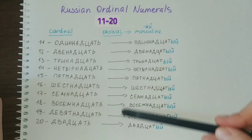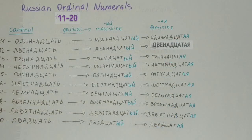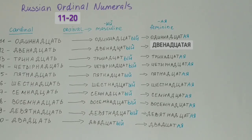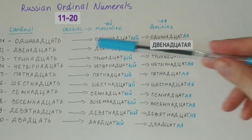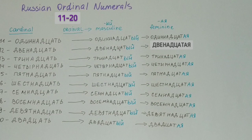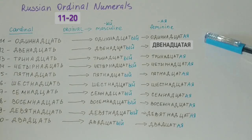Those were the masculine gender forms. Let us look at the feminine gender now. The feminine gender forms of the Russian ordinal numerals from 11 to 20 are made by dropping the soft sign ending and adding the ending -ая (-а/я). So basically the same principle. Now let us go over them.